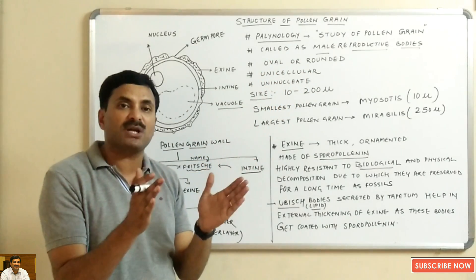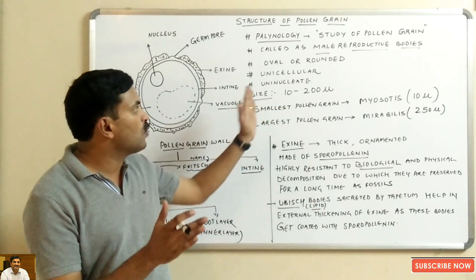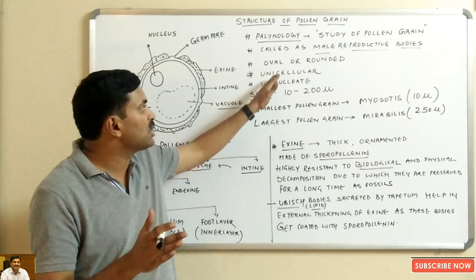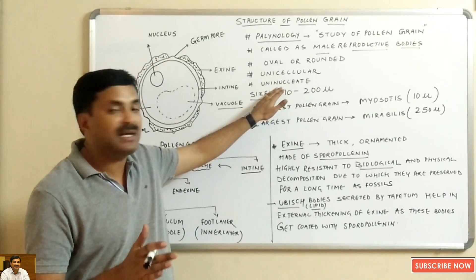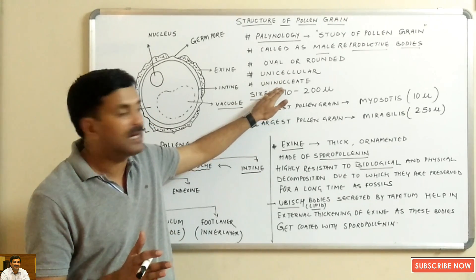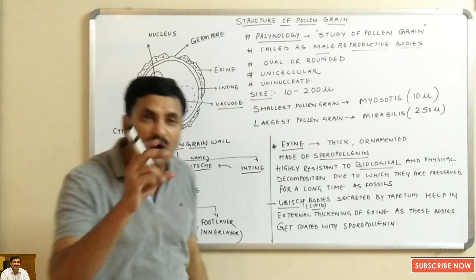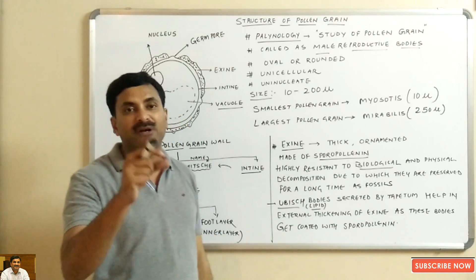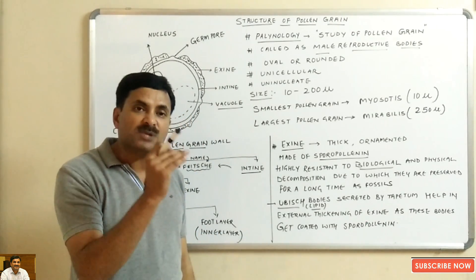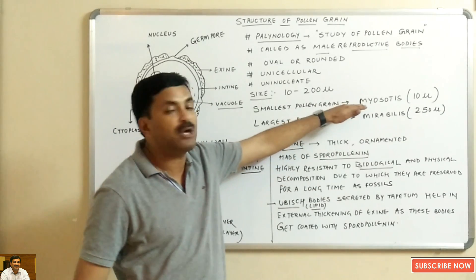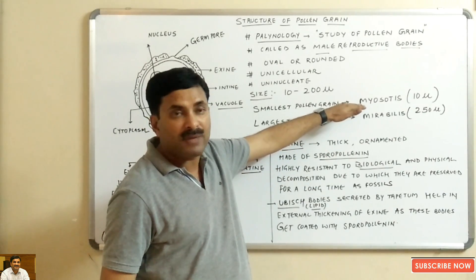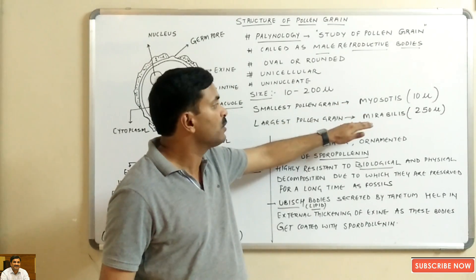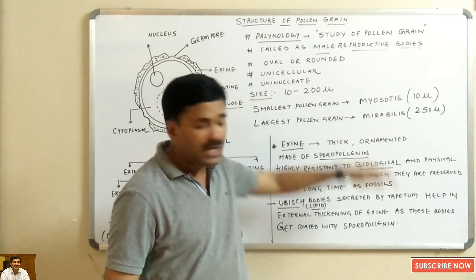If we see the structure of the pollen grain, they are oval or round in shape. A pollen grain is considered a unicellular structure and it has a single nucleus — we can say it is uninucleate. The size of the pollen grain varies between 10 microns to 200 microns. The smallest pollen grain is of Myosotis, about 10 microns, and the largest pollen grain is of Mirabilis, having a size of 250 microns.